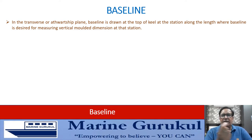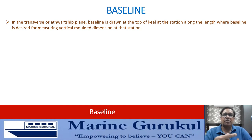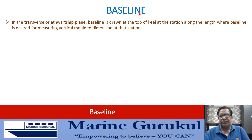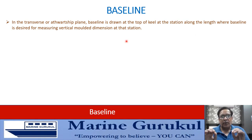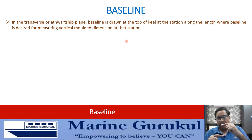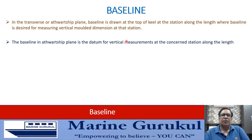For the athwartship baseline, unlike the longitudinal baseline which applies to the entire ship, the athwartship baseline is drawn at the top of the keel at a specific station along the length — it applies only to that particular station. At different stations along the ship's length, different athwartship baselines can be drawn. These are required for measuring vertical molded dimensions only at that station, not for the complete ship.